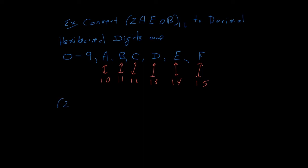So we have the hexadecimal number 2AE0B base 16 is going to be equal to 2 times 16 to the, let's see, to what power? Zero power, first power, second power, third power, fourth power. So 16 to the fourth power.